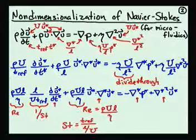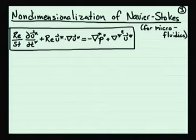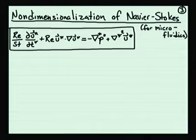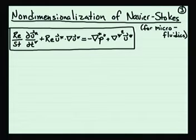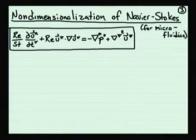Given this derived form, we can now write the non-dimensionalized form of the Navier-Stokes equations, which includes the possibility that boundary conditions could be changing. The relative magnitude of the terms is given by the Reynolds number and the Strouhal number. If we non-dimensionalized correctly, the derivative terms are approximately of order 1, and their relative magnitudes are dictated by these two non-dimensional parameters.